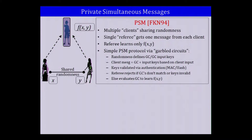Our main tool is private simultaneous messages (PSM). In this setting, multiple clients share randomness and each sends a single message to a referee. The referee is able to evaluate the function on the inputs and learn f(x, y), but nothing else. You can instantiate this PSM protocol by adapting garbled circuits: the shared randomness defines the entire garbled circuit along with the input keys, each client's single message contains the garbled circuit and the input keys for their specific input, and the referee evaluates the garbled circuit to get the final output.